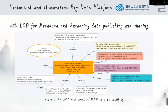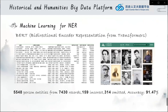We use linked open data for data and authority data publishing and sharing. Until now, we have more than 300 million RDF triples in total. We also use machine learning technology, such as BERT, for name entity recognition. Here is an example — we use BERT to extract person entities from event description text. The accuracy of BERT is up to more than 90%.